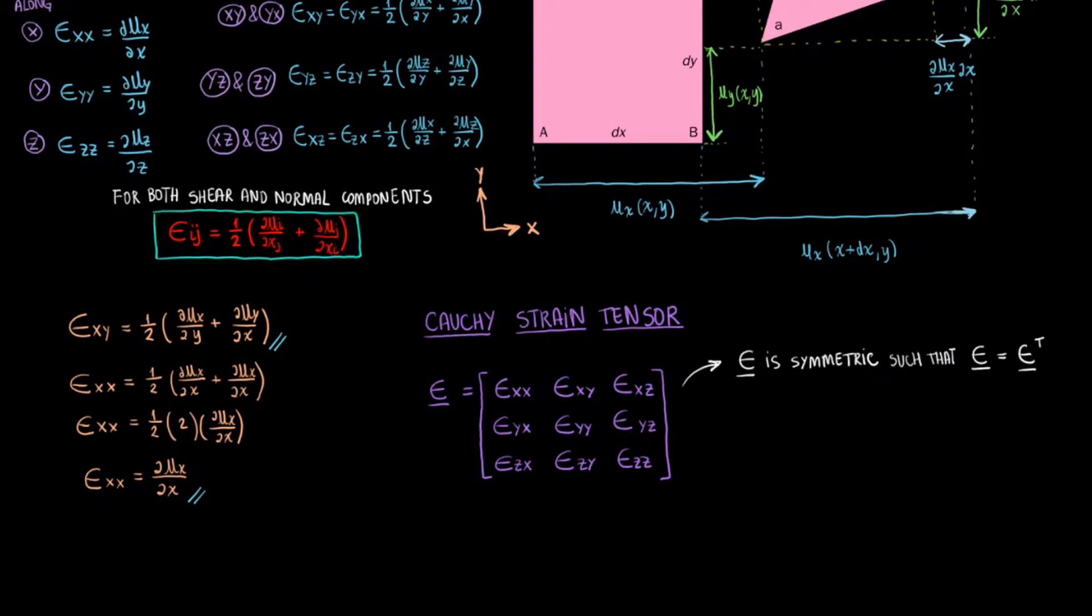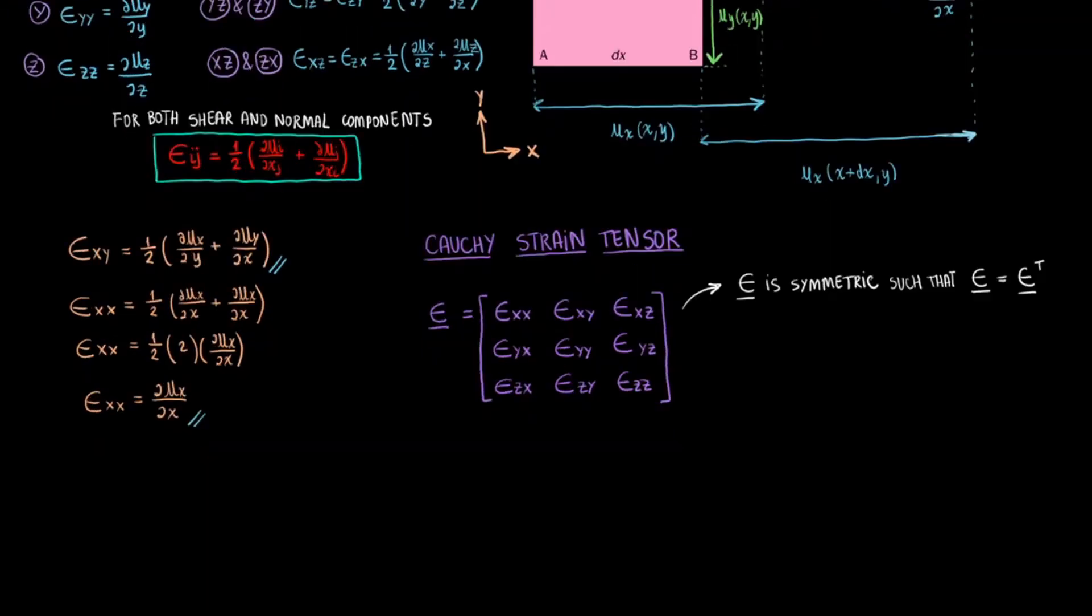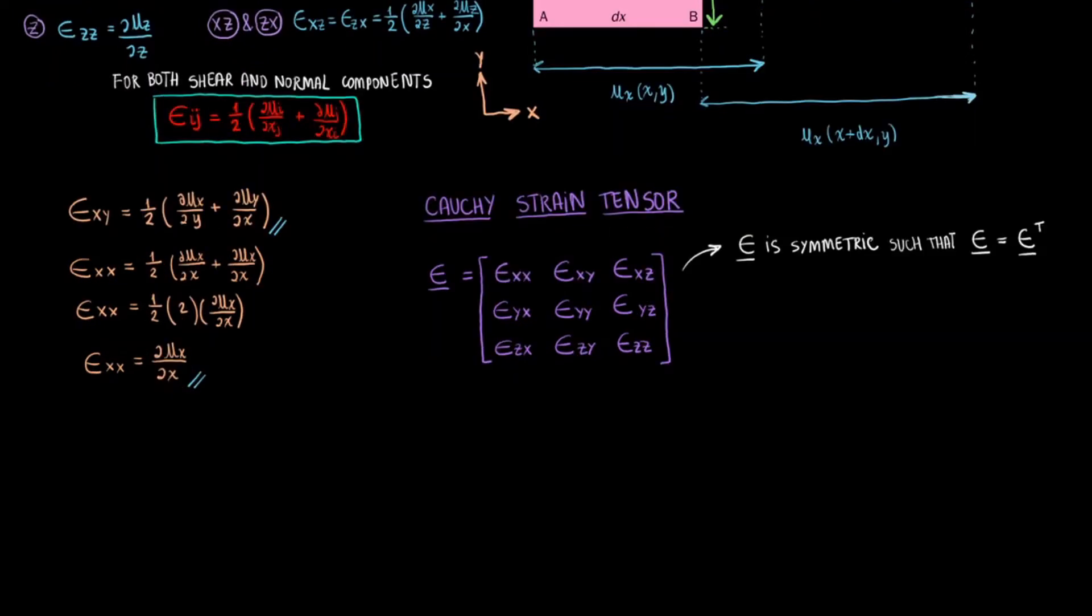From the general Cauchy strain equation, distortions on the xy plane are the same regardless of whether it is exy or eyx, since you are adding the same numbers in the parentheses. The same happens to distortions on the xz plane and to the distortions on the zy plane.